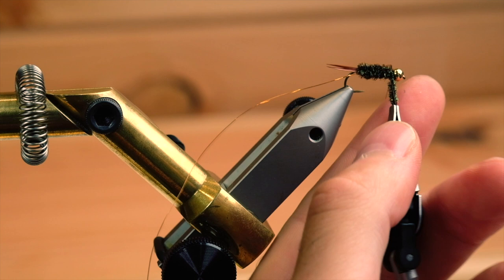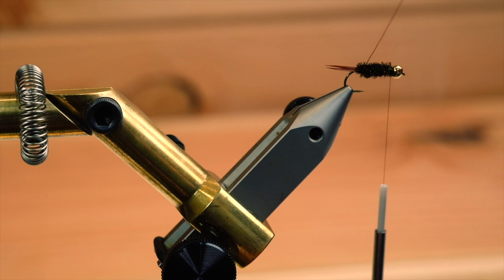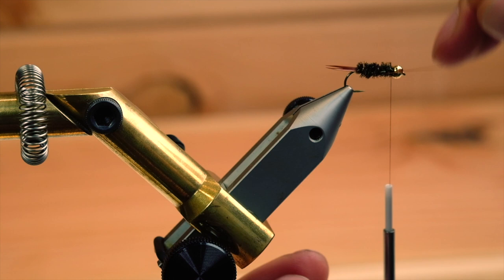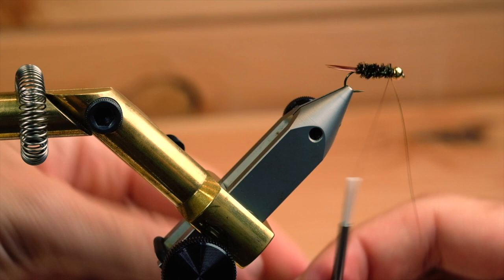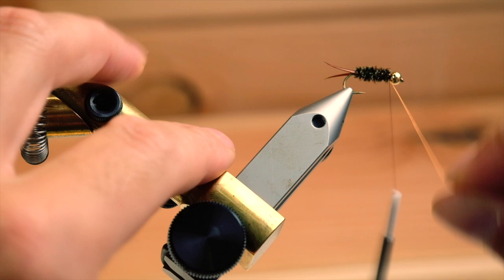Take the copper wire. You could rib it counterclockwise - they say it makes it stronger - but I'll just do it in the same direction, it works fine. Five turns, tie that off. If you wiggle it a little bit it'll break off. There's no need to ruin your nice scissors.